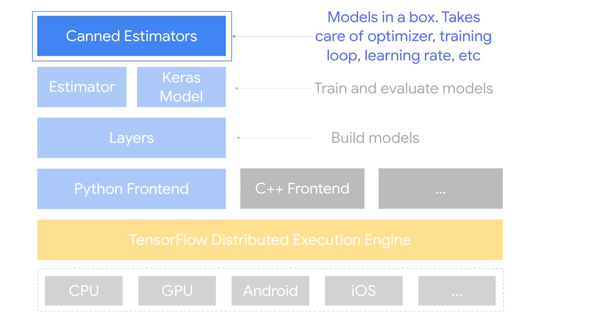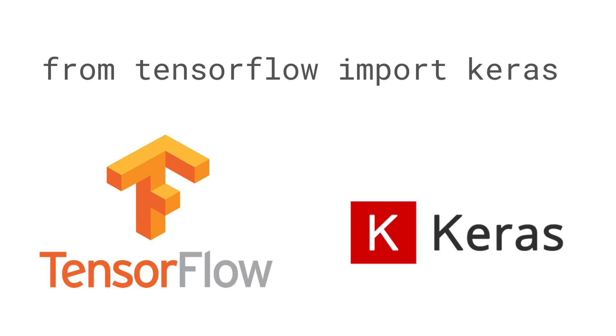There are also canned estimators that take care of even more things for you so you don't have to manage a lot of the underlying stuff — that's of less interest in this particular use case. Keras, as of TensorFlow 1.7 or 1.8, showed up inside TensorFlow as tf.keras. If you have TensorFlow installed, Keras is already there. Using the Keras inside TensorFlow gives you access to everything Keras has with the addition of those Keras model-to-estimator conversion tools. Some of the underlying implementation is different, but the interface and API abstraction layers are identical.